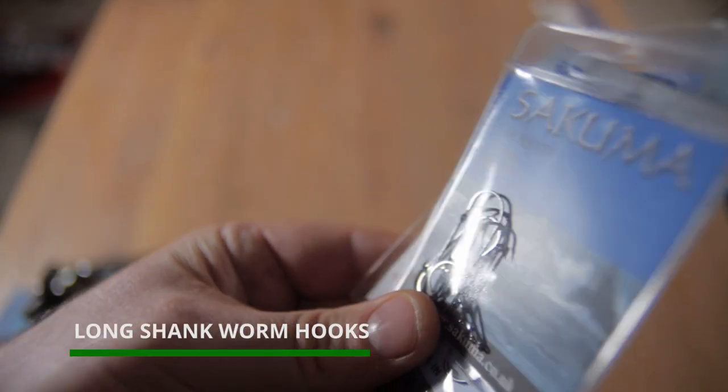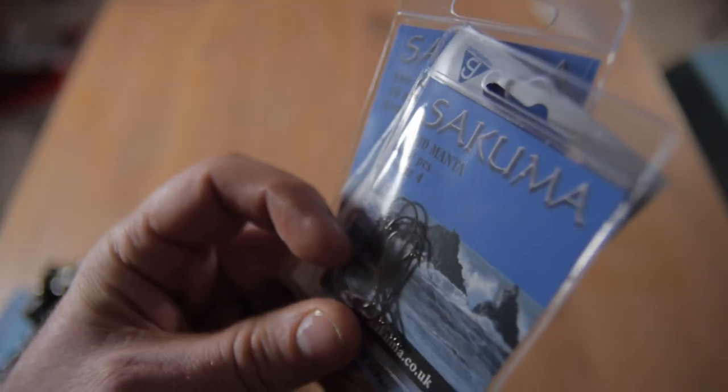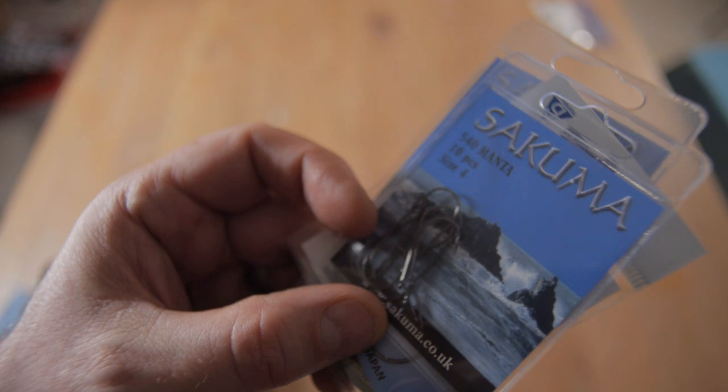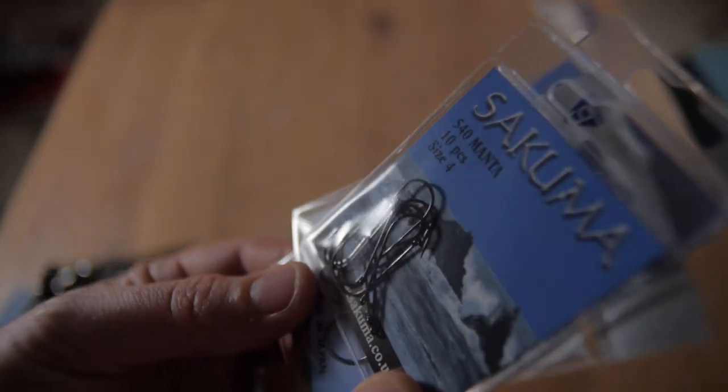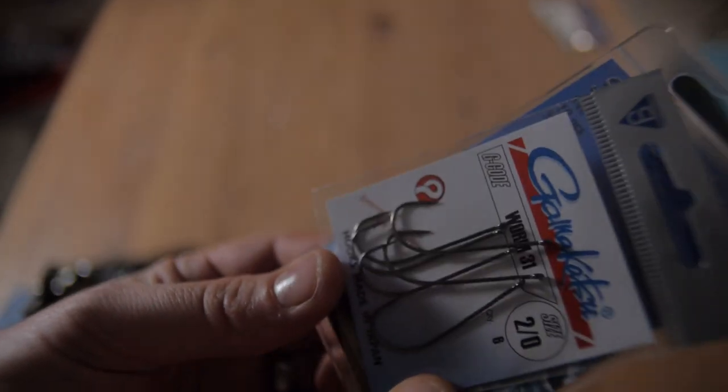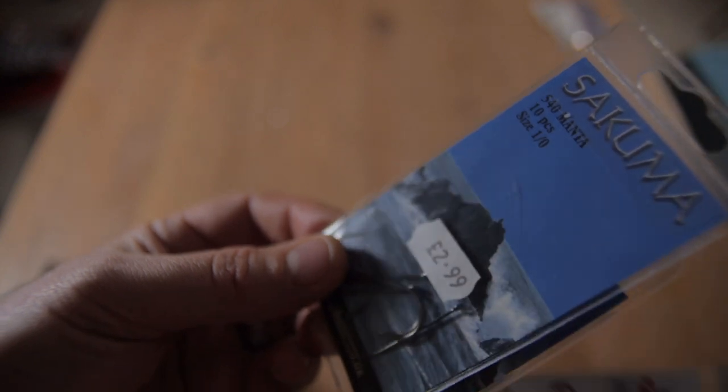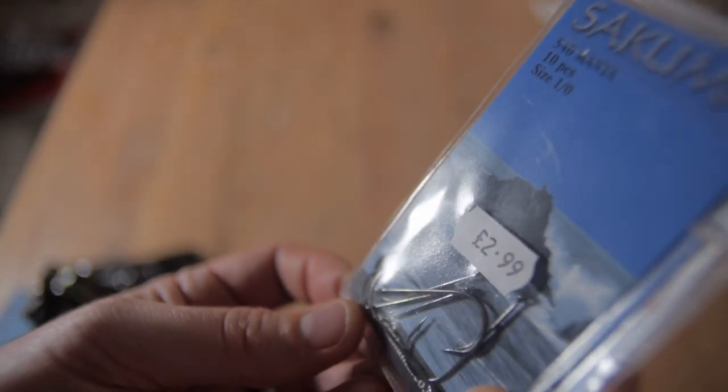Then we've just got some straight J hooks. These will be used for Texas and Carolina rigs. What I have noticed is when I use the J hooks, you get a better hook-up ratio, but the hooks tend to hook them in the roof of the mouth, whereas the extra wide gape hooks, the EWG hooks, tend to hook them in the side of the mouth. I'll tell you how I get on with those.